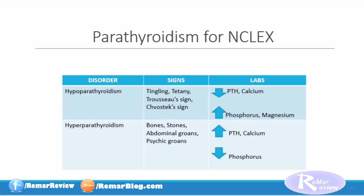So just to review: for hypoparathyroidism, the major signs are tingling, tetany, and Trousseau's sign. Our laboratory values — you will see a decrease in the parathyroid hormone, which will also lead to a decrease in the calcium level. The phosphorus and magnesium levels, however, will be elevated. In hyperparathyroidism, our signs are bones, stones, abdominal groans, and psychic moans. Our labs are an increased parathyroid hormone level, an increased calcium level, and a decrease in our phosphorus level.